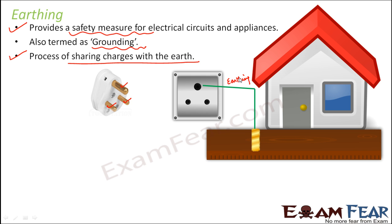The earthing wire takes all the excess charges and directly sends them to the ground so that no excess charges are left over. When you do not have any charge accumulation in the socket, the chances of electric shock reduce to a large extent. Also, in case of voltage fluctuations, all excess charges can immediately be grounded through this, so the chances of damaging the appliances also decrease.